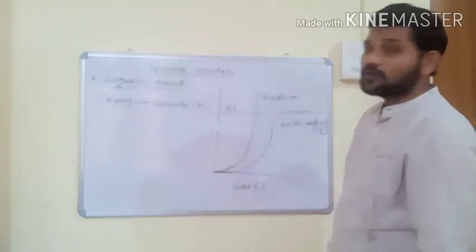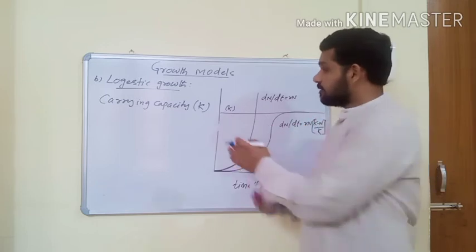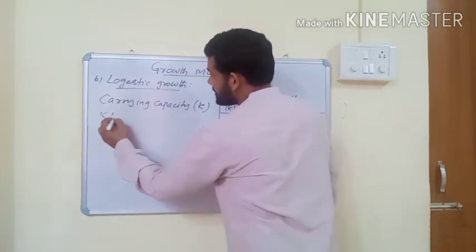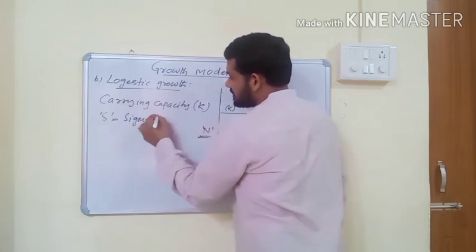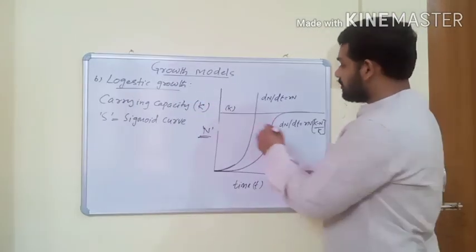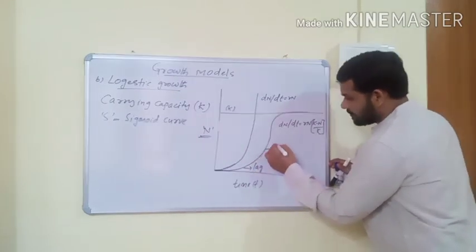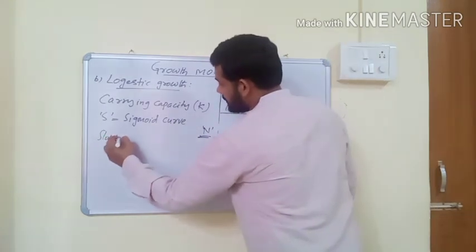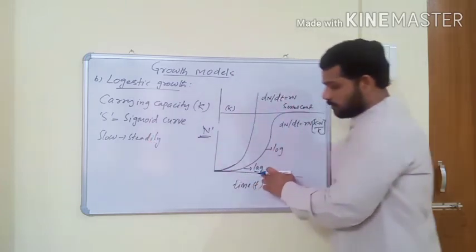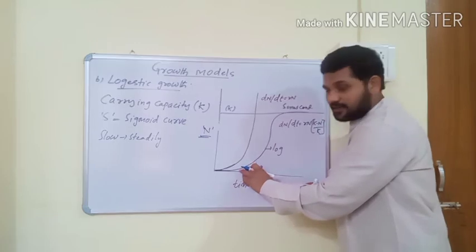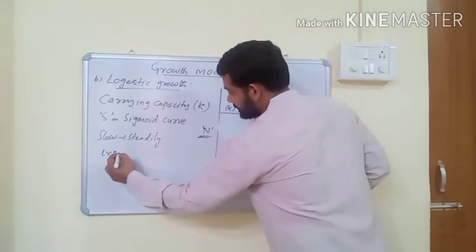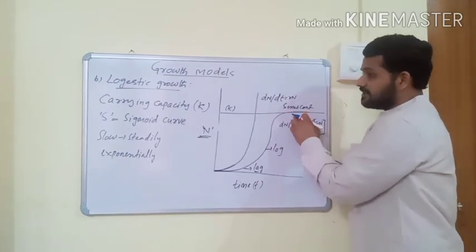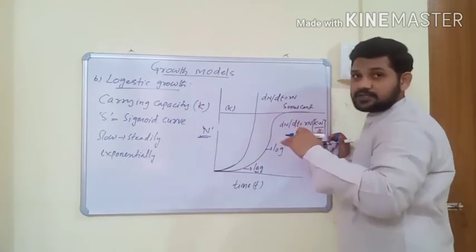In logistic growth, resources are limited. When population density is plotted against time, we get an S-shaped curve, also known as a sigmoid curve. The sigmoid curve has three phases: lag phase, log phase, and senescent phase. In the lag phase, growth is slow but steady due to low initial numbers. In the log phase, growth occurs exponentially as food and space are still available. In the senescent phase, due to limited resources, growth comes to a stop.